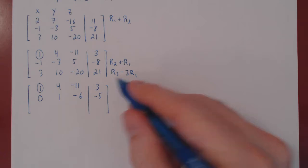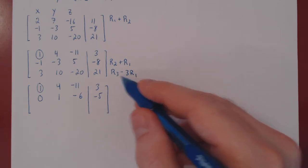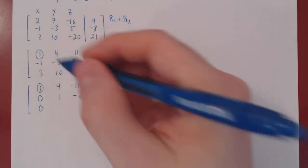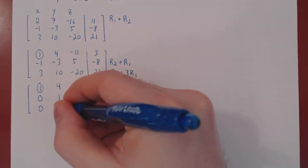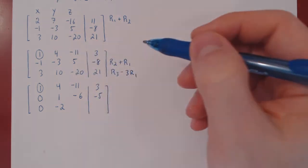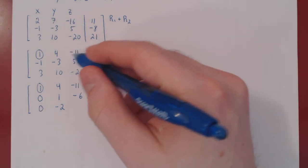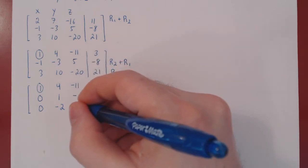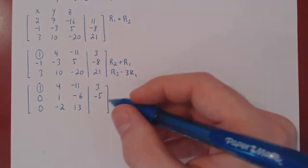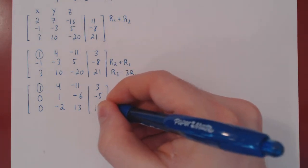Let's apply the other row operation. Row 3 minus 3, row 1. So 3 minus 3, 0. 10 minus 3 times 4, minus 12 is negative 2. Negative 20, negative 3 times negative 11 is positive 33. 33 minus 20 is positive 13. 21 minus 3 times 3, times 3 minus 9 becomes positive 12.